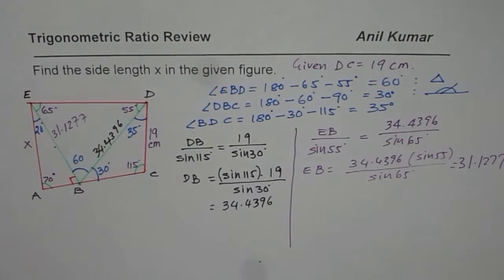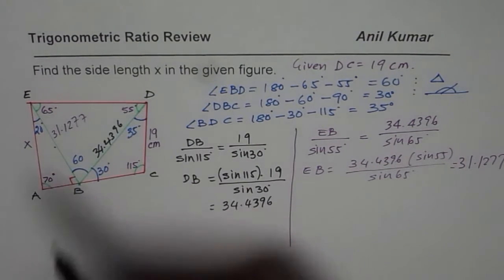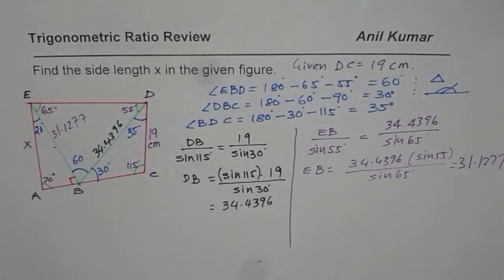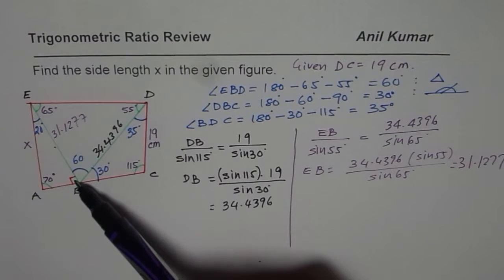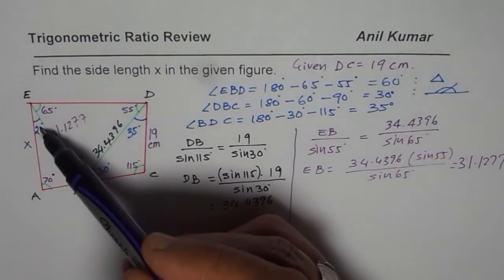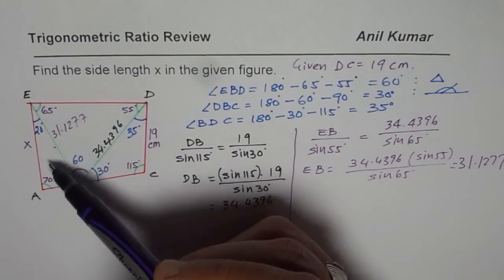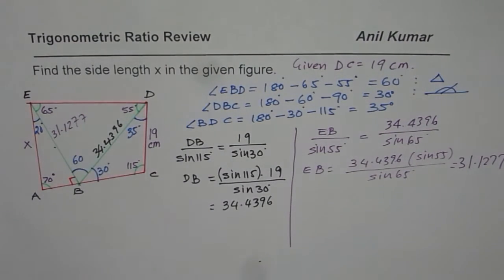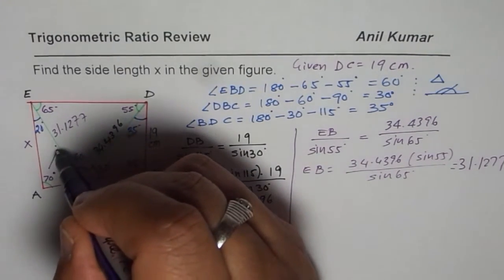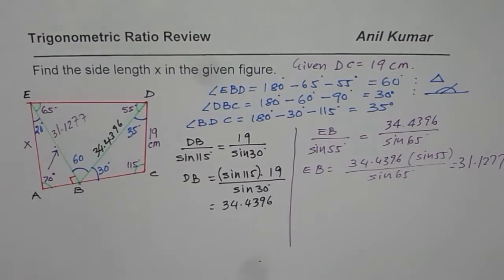Now we need to find X. This is a right triangle and X is the hypotenuse. We know the side which is adjacent to 20 degrees, or equivalently opposite to 70 degrees. You can use either of these ratios to find the solution.